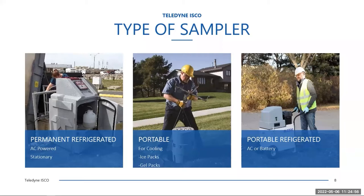Cooling for portable samplers is often performed by putting ice packs or gel packs in the sample base around the bottles for sample preservation. This is probably the most common sampler option for this method of sampling, because what you sample today may not be the location you're going to sample at tomorrow, so you want something that's portable in nature. We also have portable refrigeration sampler options where the sampler is easily moved around on a cart with wheels, with the advantage of active refrigeration — unlike ice, which is going to melt, the portable refrigerated unit will actively cool the sample until it is collected for delivery to the lab.